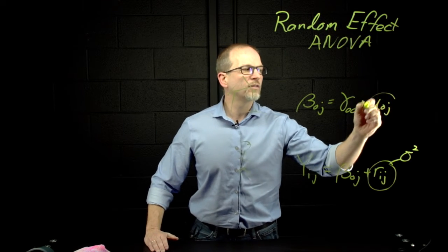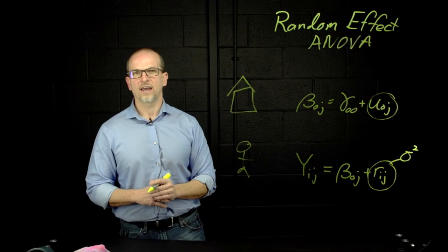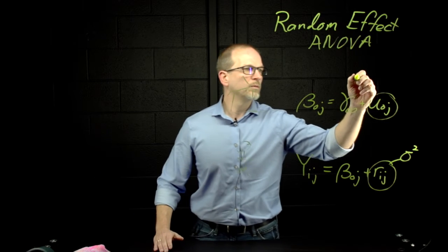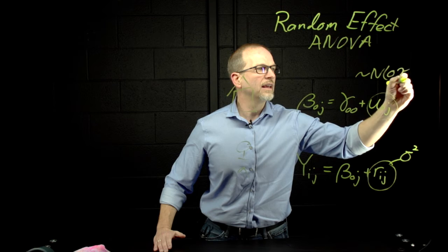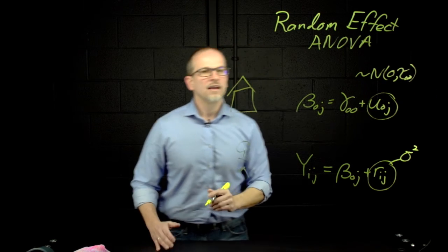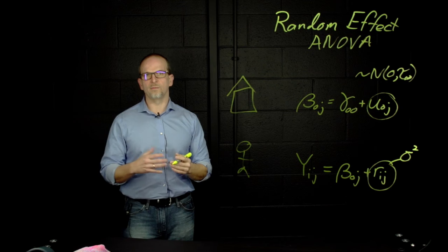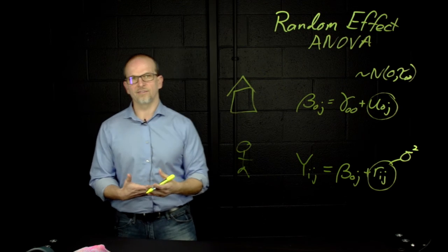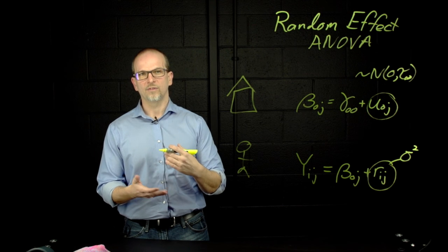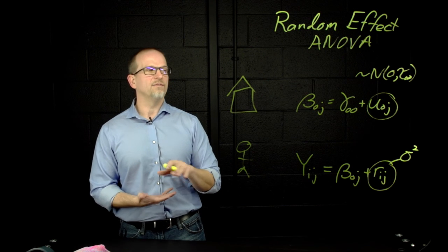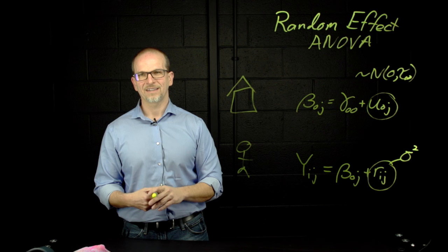But we will also have u sub zero j, which is assumed to be normally distributed with mean zero, and it will have a variance tau zero zero. And so you see our random effects ANOVA is going to be one of our simplest cases of an HLM analysis to where we split up the variability between variability within school and variability between school. Thanks.